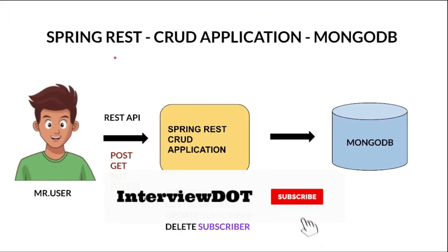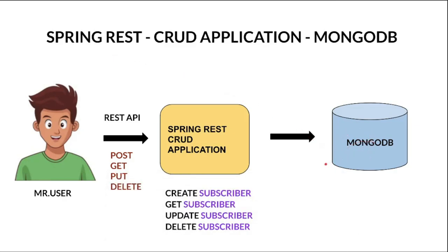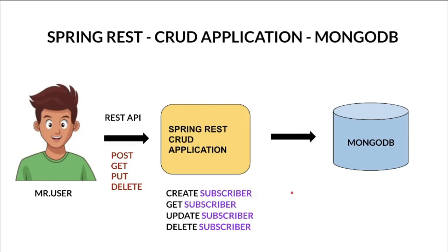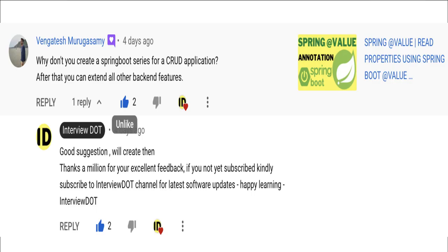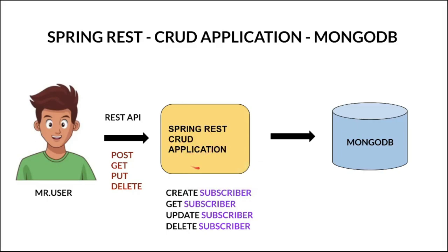In this video I'm going to talk about building a Spring REST CRUD application using MongoDB as a database. We're going to build a very simple Spring REST application — one of our subscribers gave the suggestion to create this series, so thanks to Mengadesh. This application can perform CRUD operations — create, retrieve, update, and delete — and it manages a domain object called subscribers.